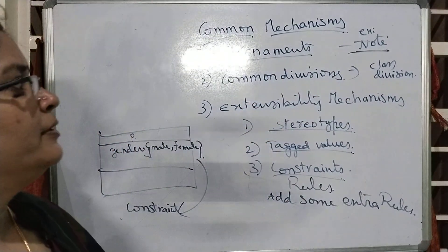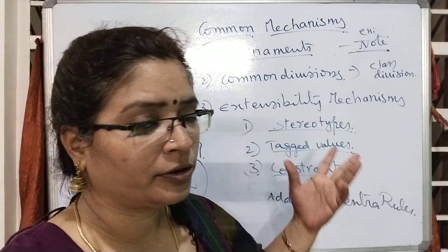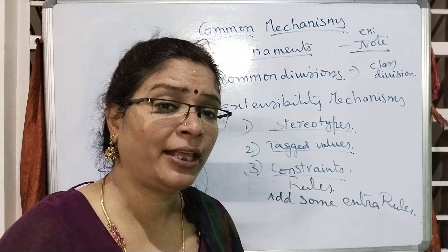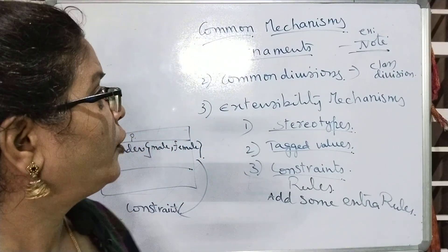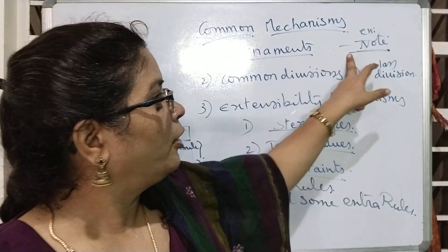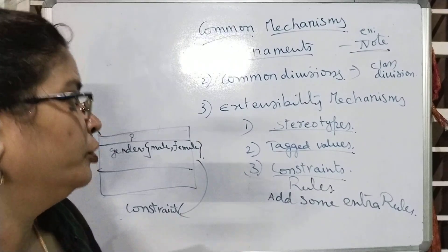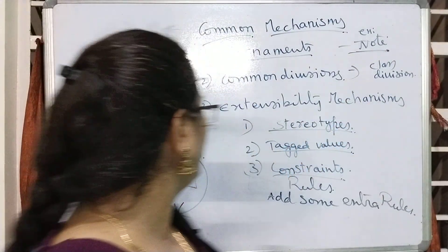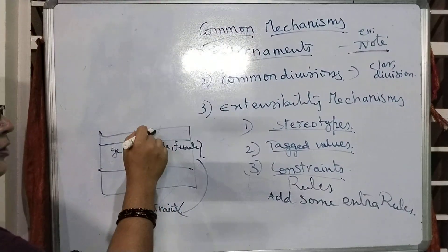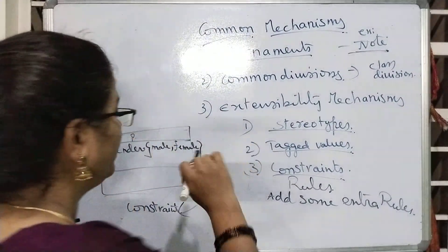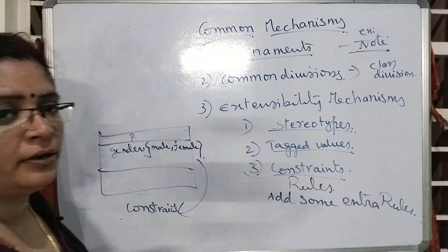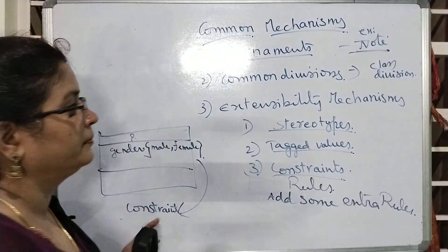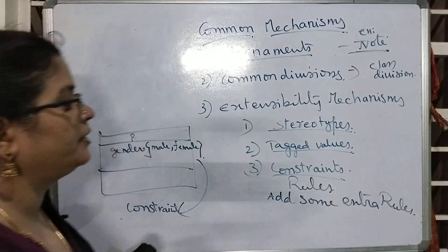The best example for adornments is 'note' — the dog-eared corner. It may contain either links, diagrams, text, or explanation — whatever you want to give, you can add in the adornment. The next one is common divisions. Class divisions are common divisions — division one is the class name, the next division is the set of data members, and the third division is the set of operations.